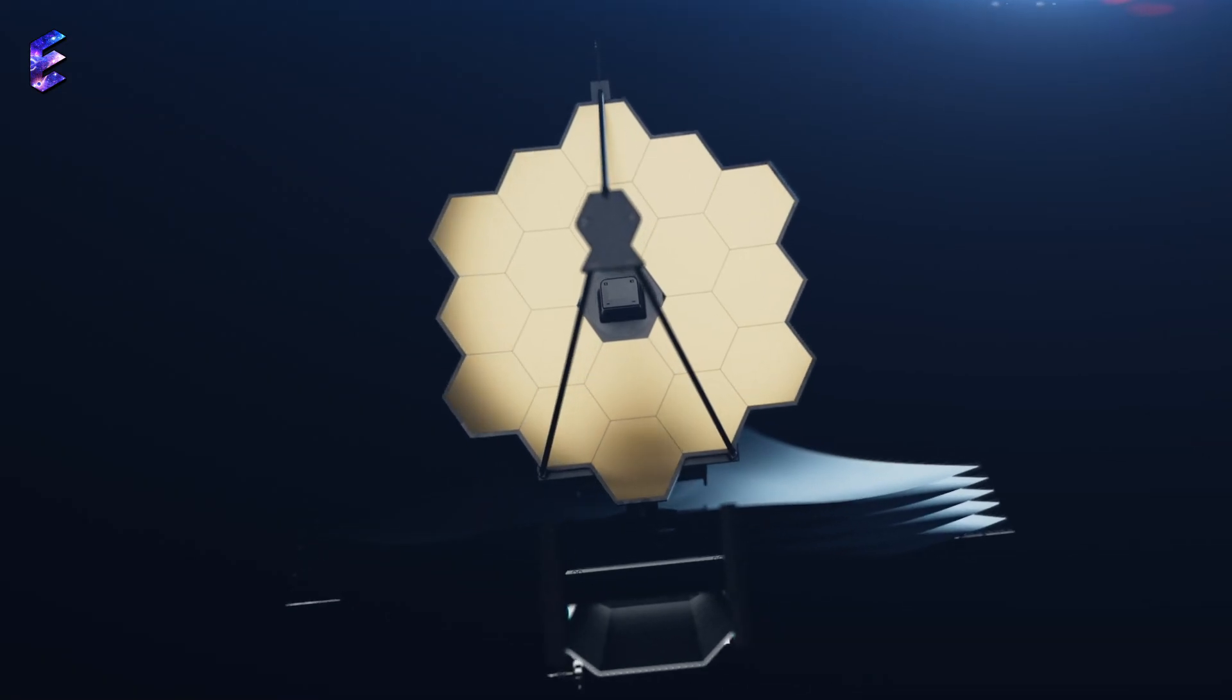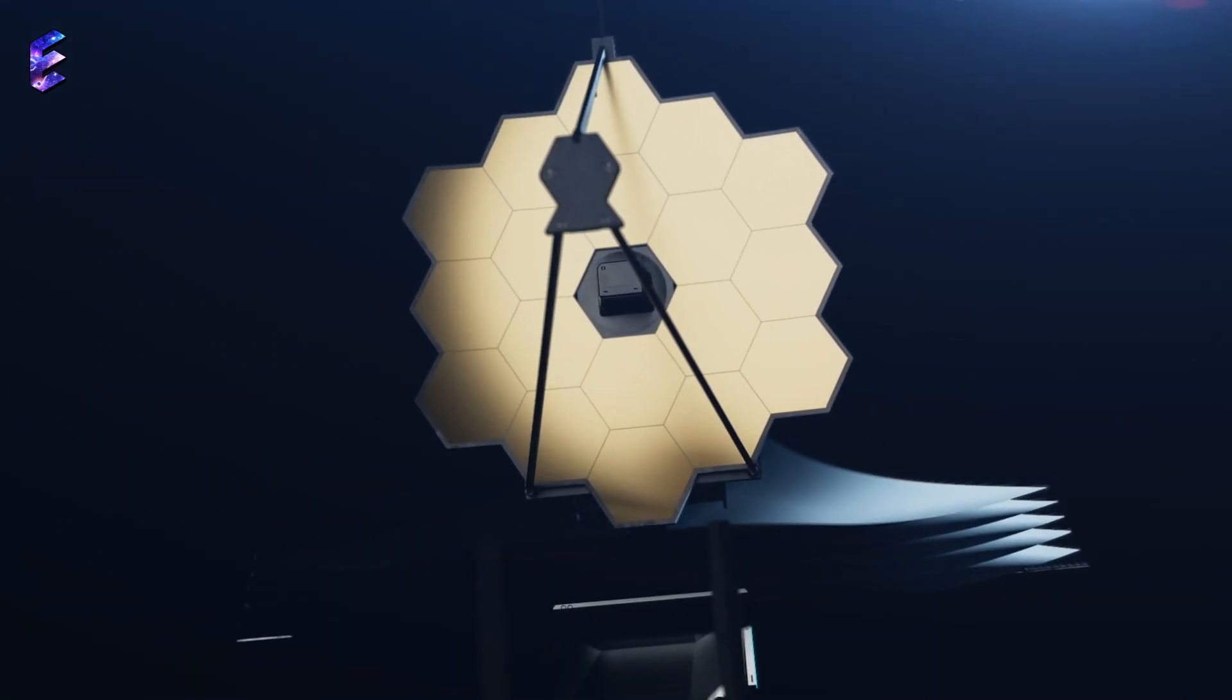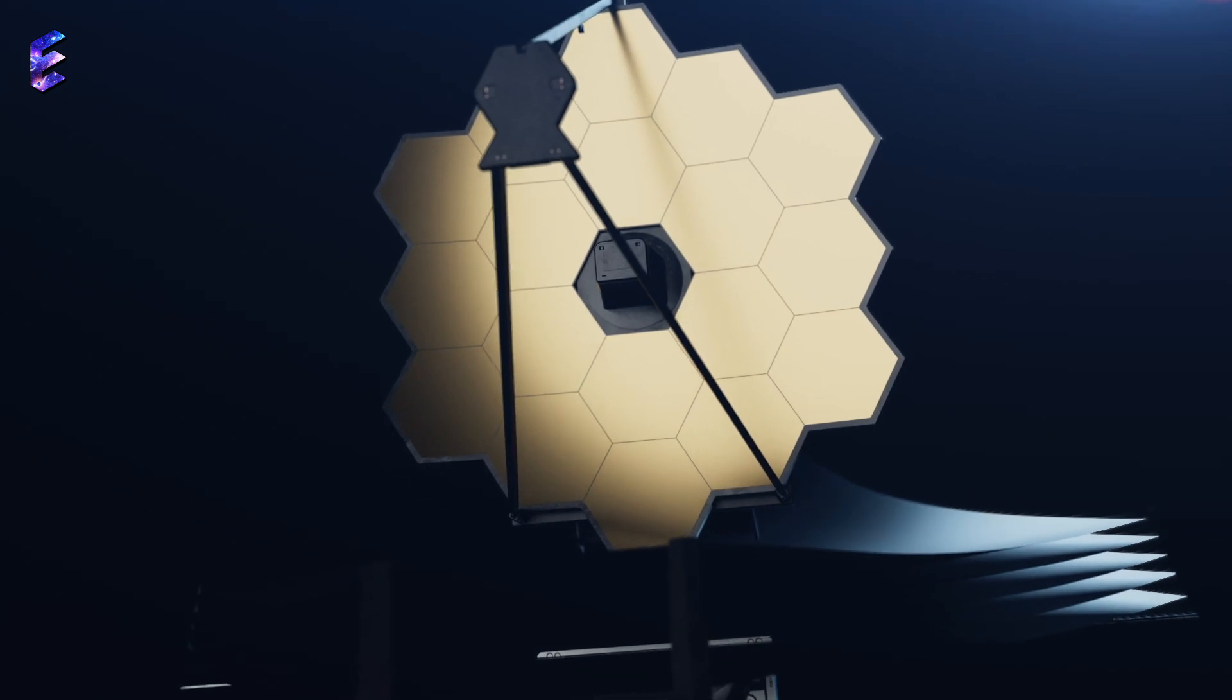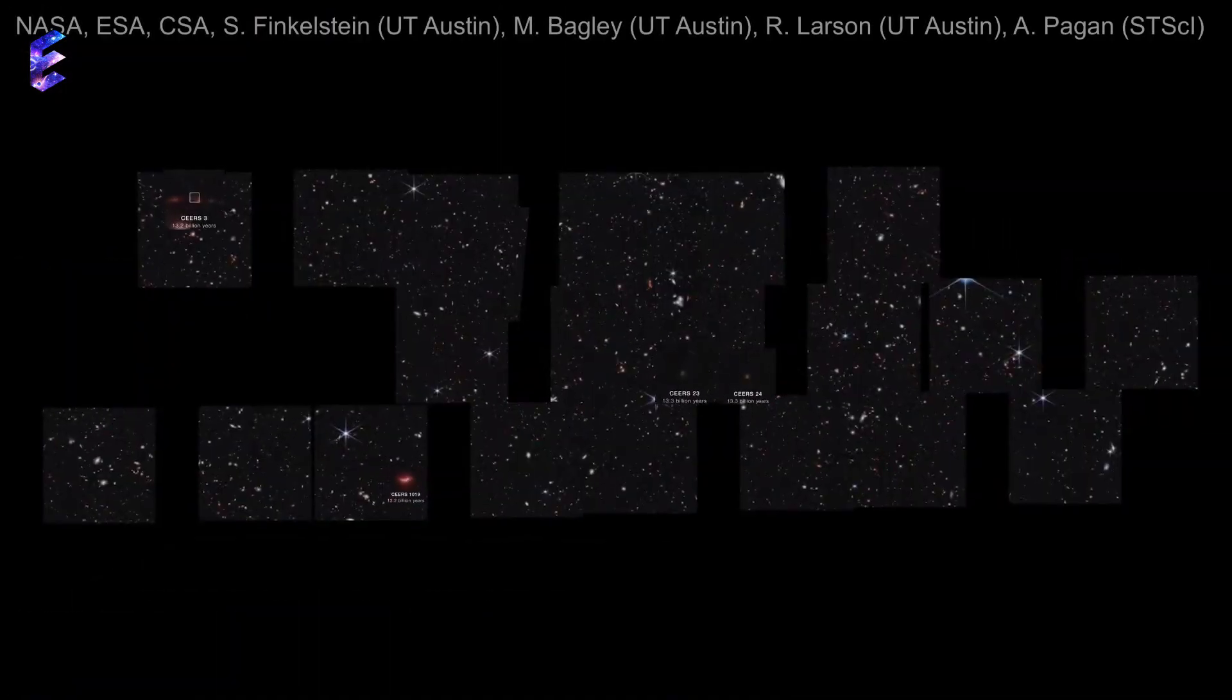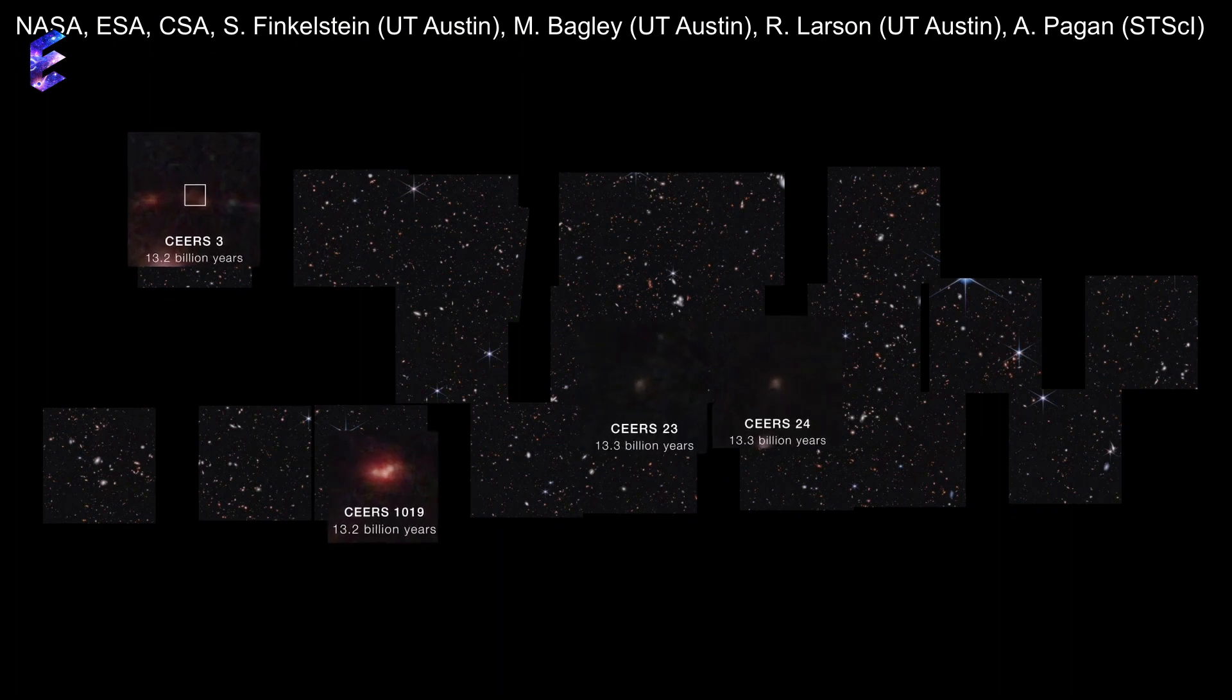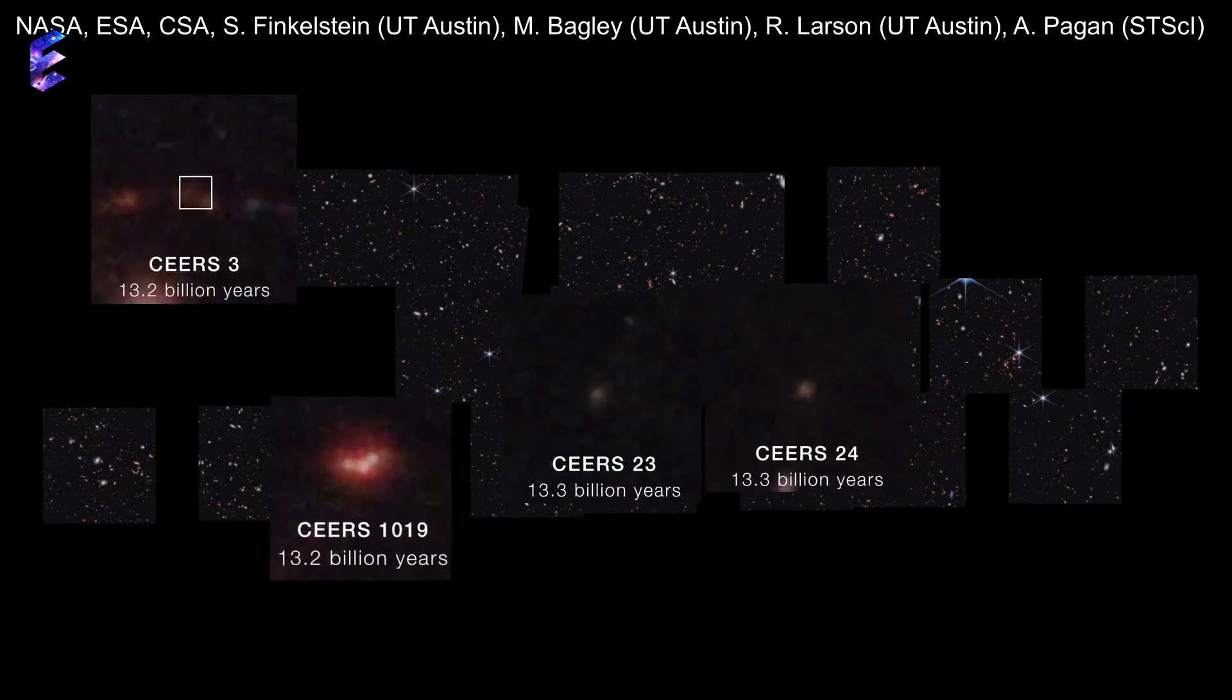Meanwhile, the James Webb Space Telescope continues to test our understanding of the universe. The first data provided from the CEERS survey depicts a location known as the Extended Groth Strip and transports viewers to a moment shortly after the Big Bang.